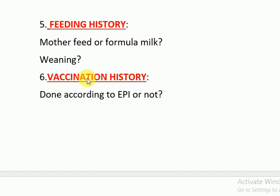Number two is the feeding history, which is also very important. You would ask the mother whether the child was breastfed or given formula milk, and at what age weaning was started and with what food. These questions help in diagnosis because some diseases are associated with milk problems or weaning problems — for example, the child may be underweight due to weaning or other issues.